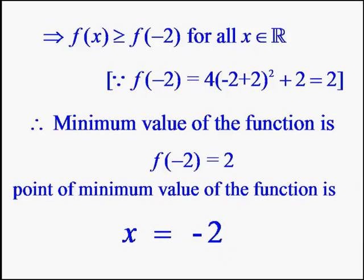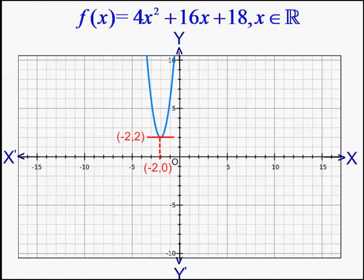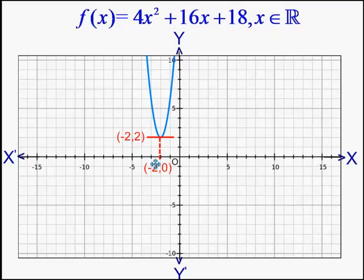Now we will see the same thing in the graph. The graph of this function is a parabola — in fact, it is an upward parabola. We can clearly see the minimum point on the graph. It is at x = -2, and the value is 2. Therefore, the function attains its minimum value at x = -2.